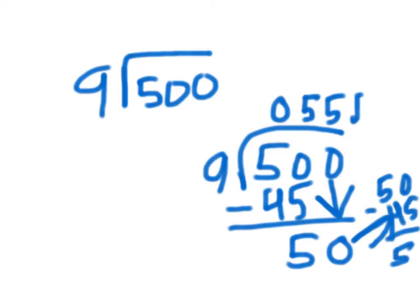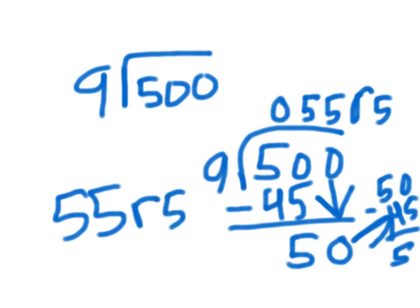And then you would put an R to stand for remainder, and then you'd put the 5. So your answer is 55 with a remainder of 5. Bye.